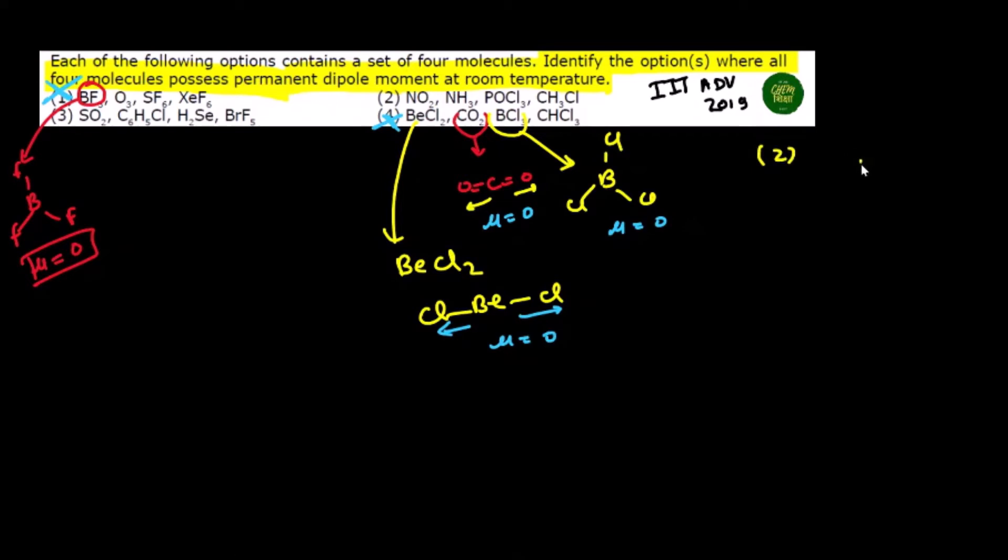Looking at SO2, the structure looks something like this with an electron pair here. This has a dipole moment. Similarly, ammonia NH3 with sp3 hybridization has a dipole moment that doesn't cancel to zero.